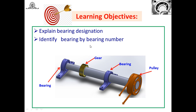In earlier sessions, we have seen what is the purpose of bearing, what do you mean by bearing, why bearings are used, and how to select the bearings. But before selecting the bearings, we should know very well their designation and how to identify the bearing by bearing number. Rolling contact bearing is a standard component. If you are going to purchase it in the bearing market, you should know what that bearing number indicates.